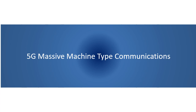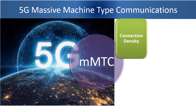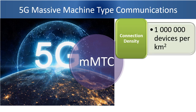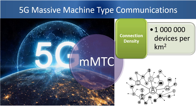Let us look at these requirements for 5G new radio. Connection density: ITU has envisioned support for 10 lakh devices per square kilometer in a 5G network. This will suffice the requirement of machines, objects, and things which are to be connected on the 5G network, enabling use cases in agriculture, smart city, industry, and so on.